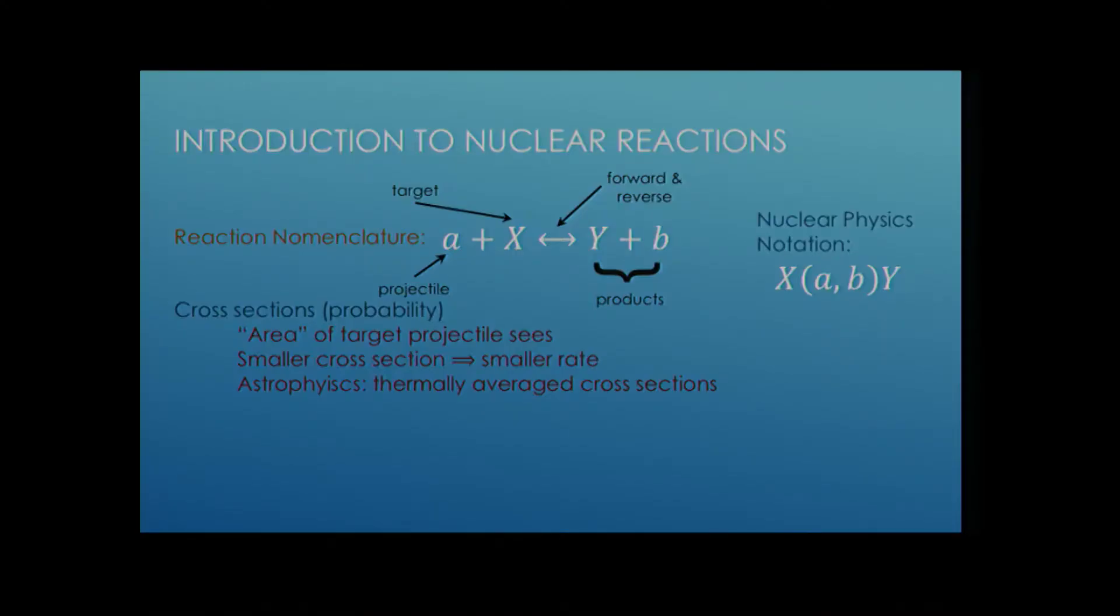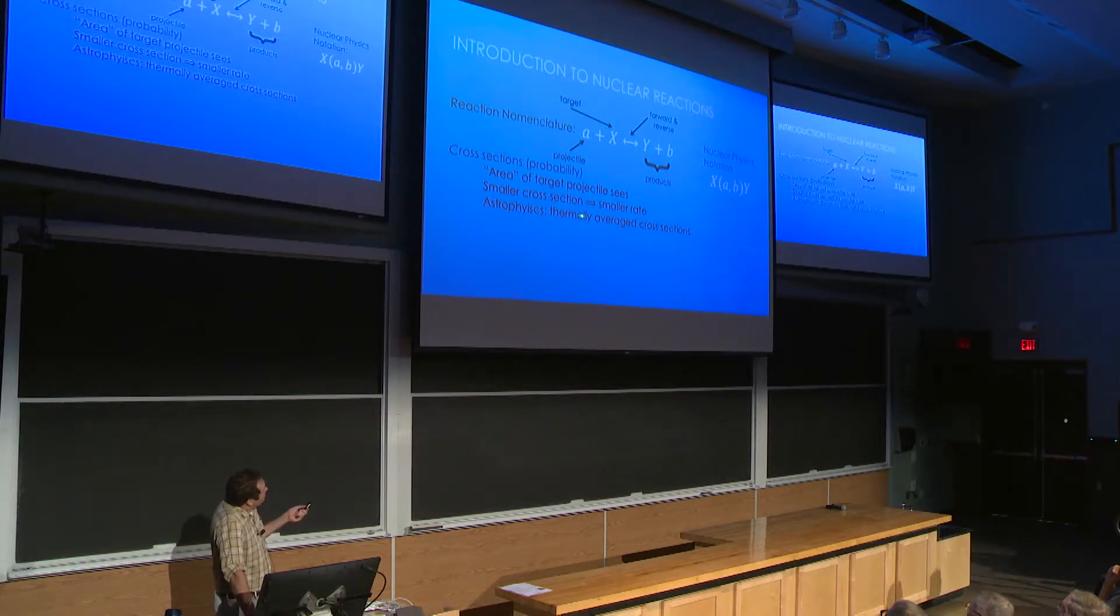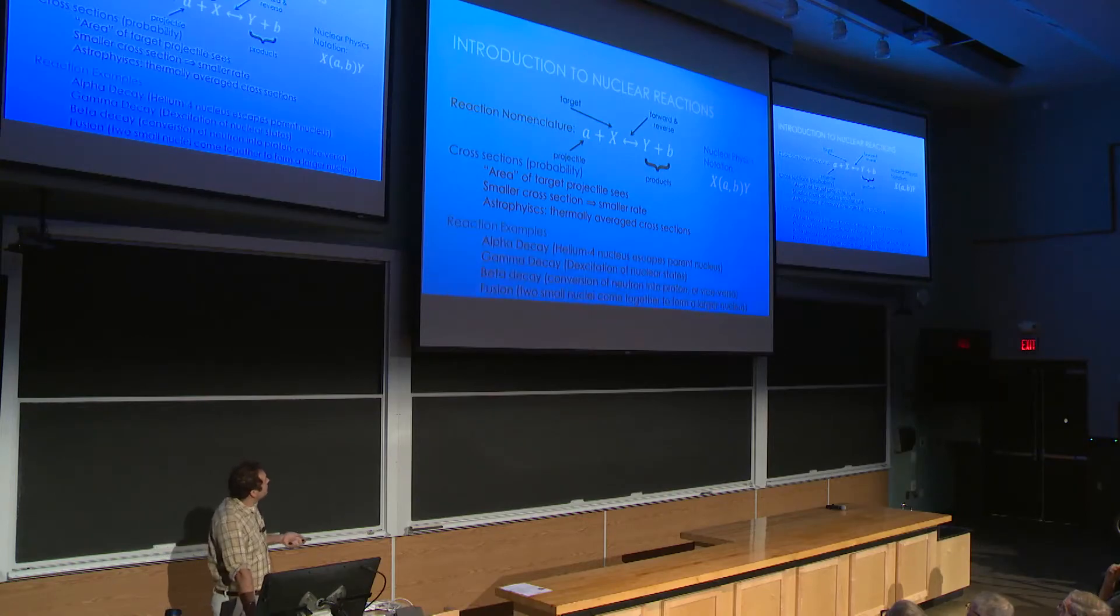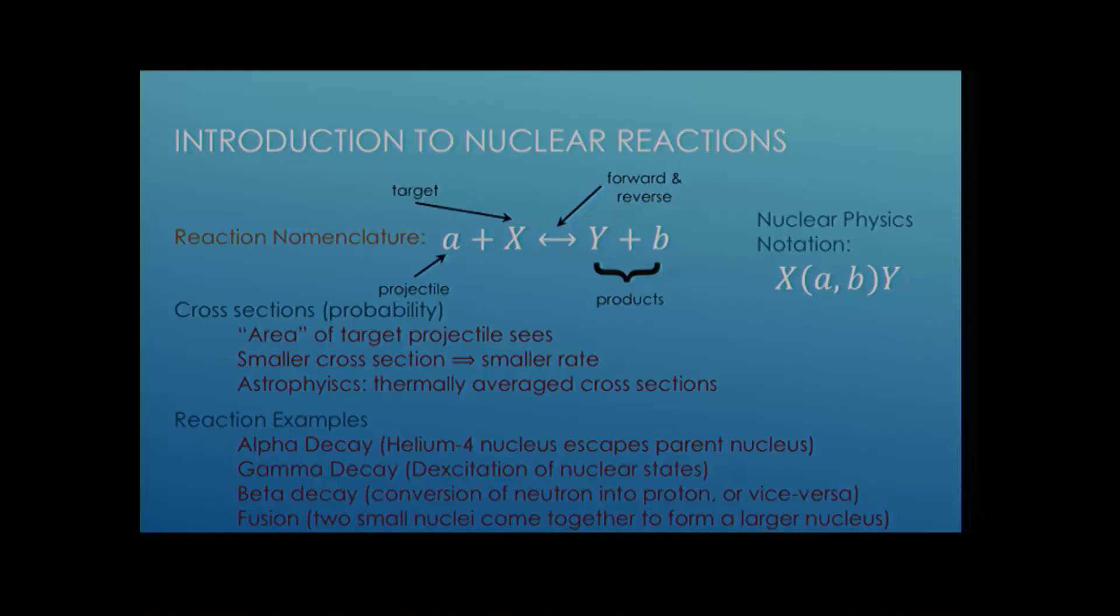This is just supposed to be a nuclear, but it's kind of drawn like a chemical reaction. You have a projectile on a target and that produces these products. But the reaction can go one way, it can also go backwards. And this is going to be important when we actually calculate reaction networks. I'll sometimes use this notation just as a shorthand for this longer expression. The cross-section of this reaction is also the probability. It gives you an effective area what the target particle sees of the projectile.